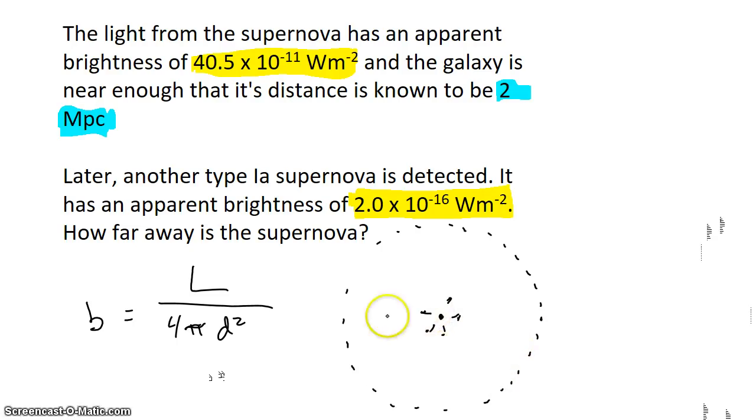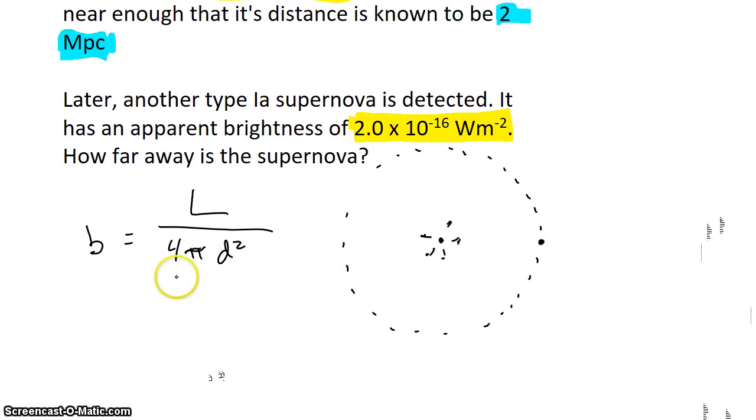So the whole power, its luminosity, goes in all directions, including to Earth. So if you divide all that power into the surface area of the shell, you get how much power reaches each square meter on that shell, and that's the apparent brightness b.